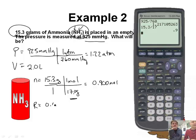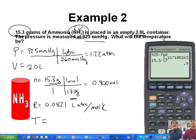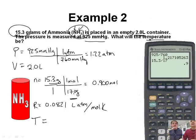R is 0.0821 liter·atmospheres per mole·kelvin. And T — the temperature — is what they're asking us to find. That is our unknown.